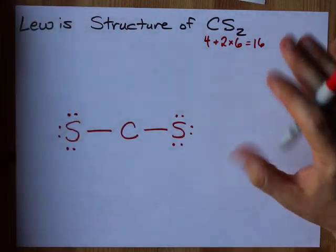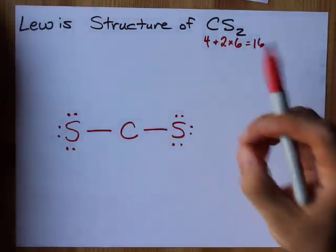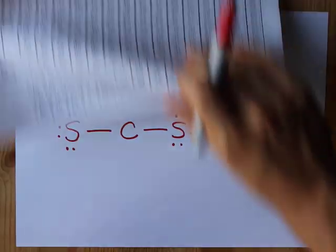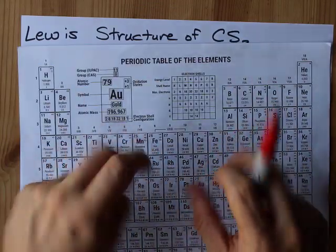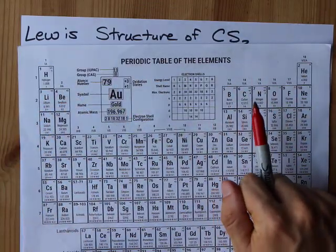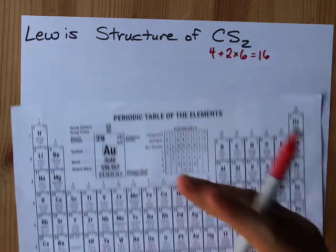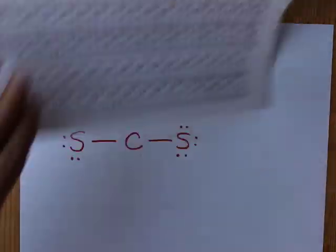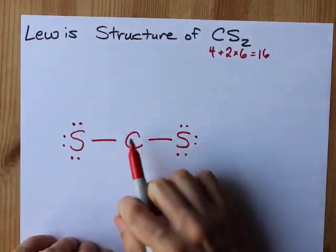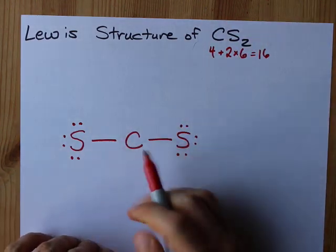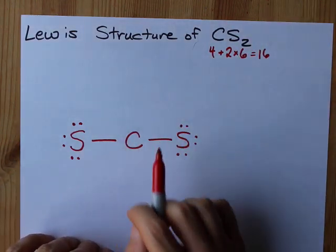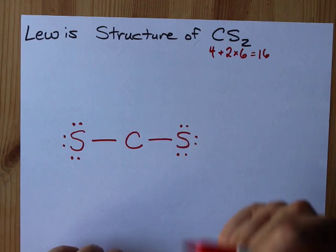The trick here is that carbon needs to have a full octet of all the atoms on the periodic table that they taught you the octet rule applies for. Carbon, nitrogen, oxygen, and fluorine actually always follow that rule. So, this carbon needs eight electrons and currently it's only got four around it. Two here and two here. How are you going to fix that?